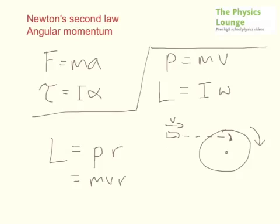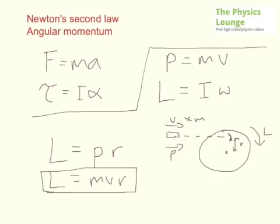All of that momentum that the bullet initially had becomes angular momentum. You take the velocity of the bullet times the mass of the bullet to give the momentum, and multiply it by the radius at which it hits. That will give you the angular momentum achieved by the disc.